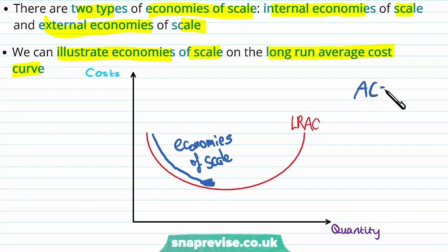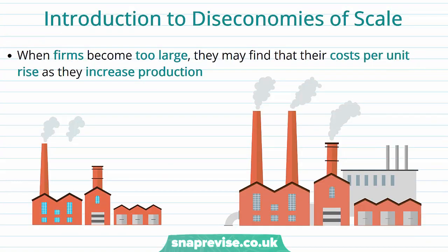Remember, average cost is nothing more than our total costs divided by quantity. And if total costs are increasing, if our quantity is increasing more than our total costs, then average cost will be falling as a result.